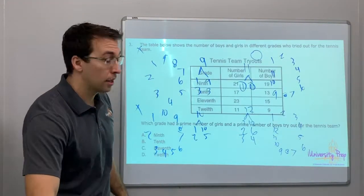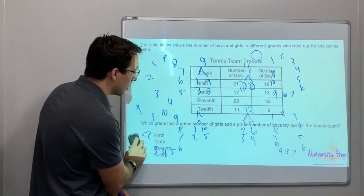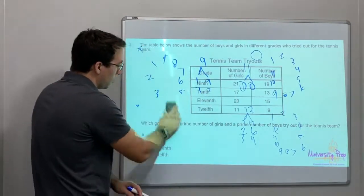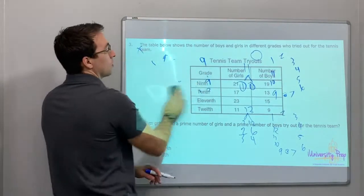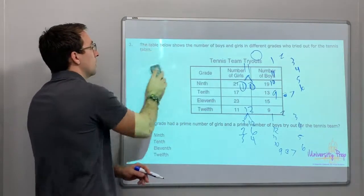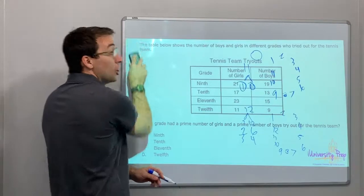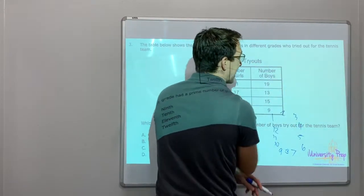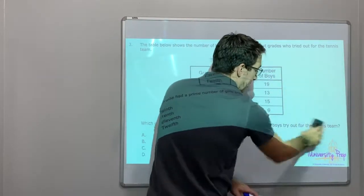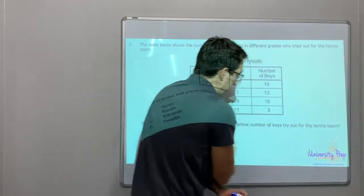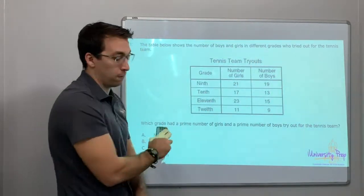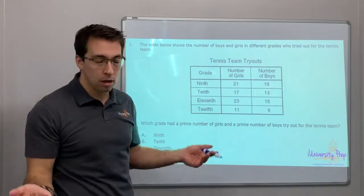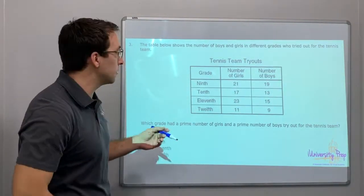Here's a trick question: is 2 a prime or composite number? 2 is a prime number because it can only be divided by 1 and itself. Just because it's even doesn't mean that it's composite.